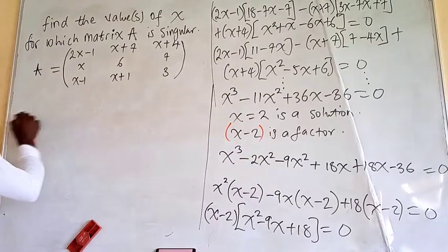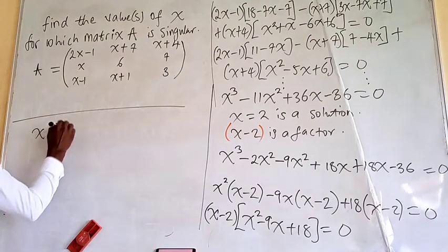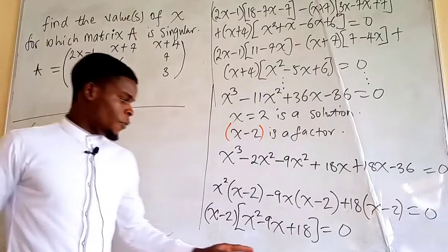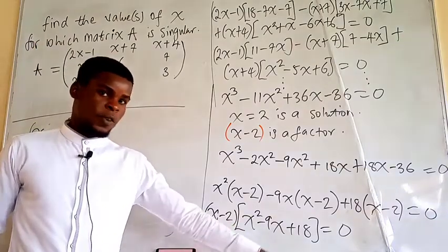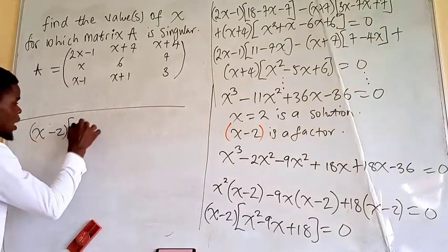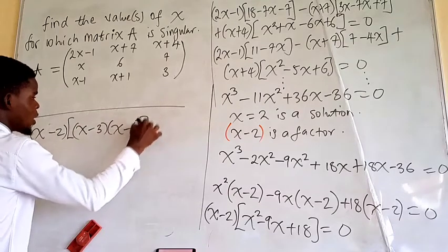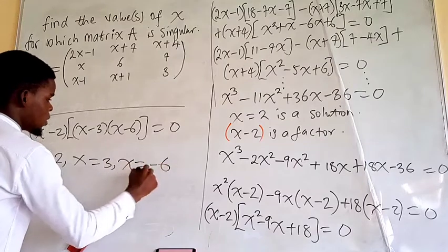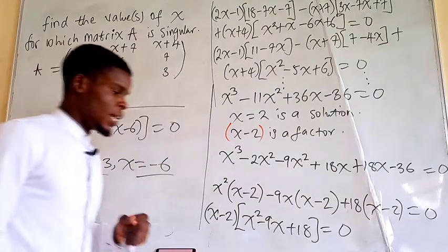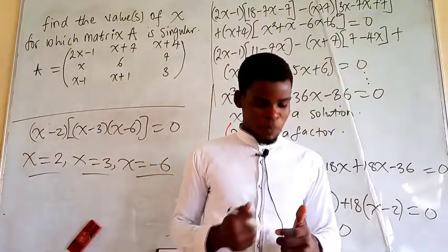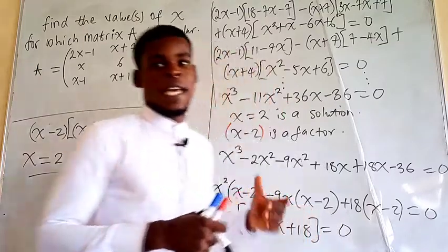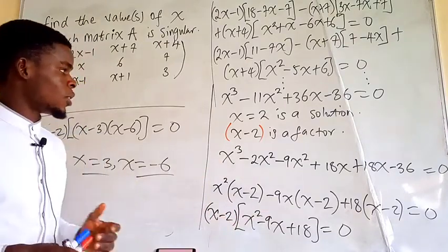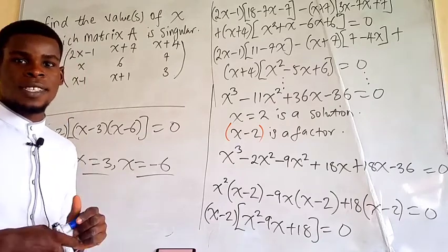Everything that is factorable: we have x minus 2 times (x squared minus 9x plus 18). To factor x squared minus 9x plus 18, we note that negative 6 times negative 3 gives 18 and they add to negative 9. So x minus 3 and x minus 6 are the other factors. Therefore x equals 2, x equals 3, and x equals 6 are the values of x for which matrix A will be singular. This was pretty straightforward — the main difficulty is expanding without errors. Thanks for watching.